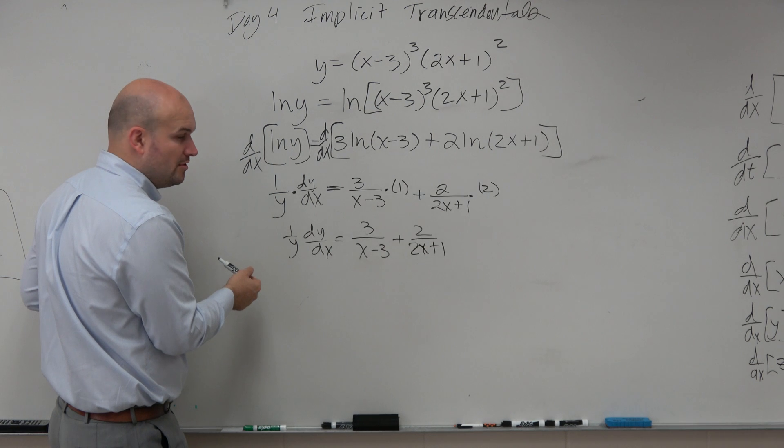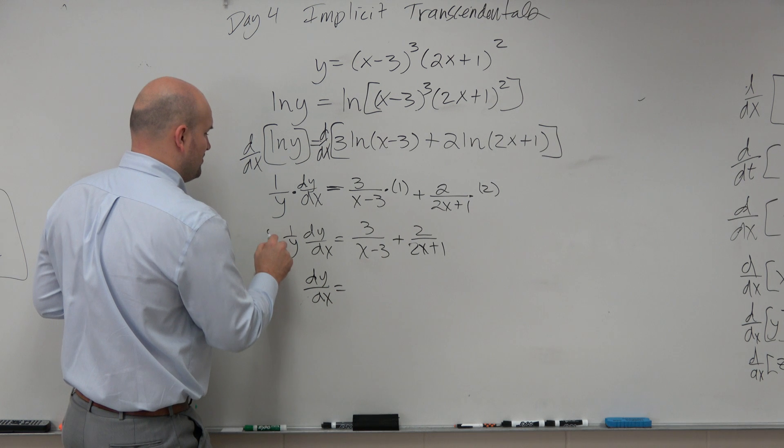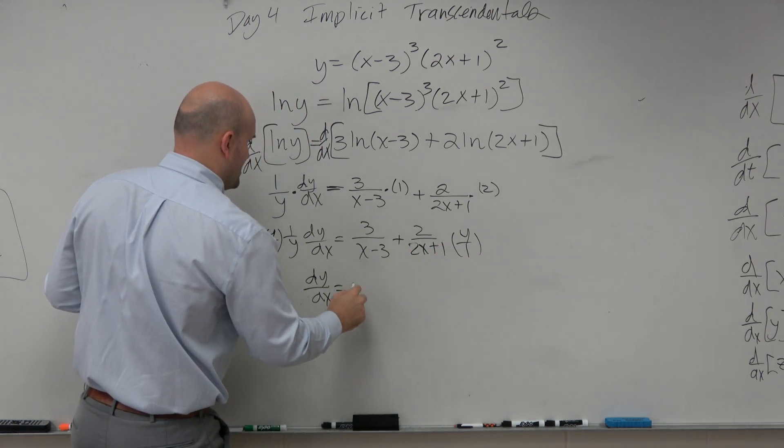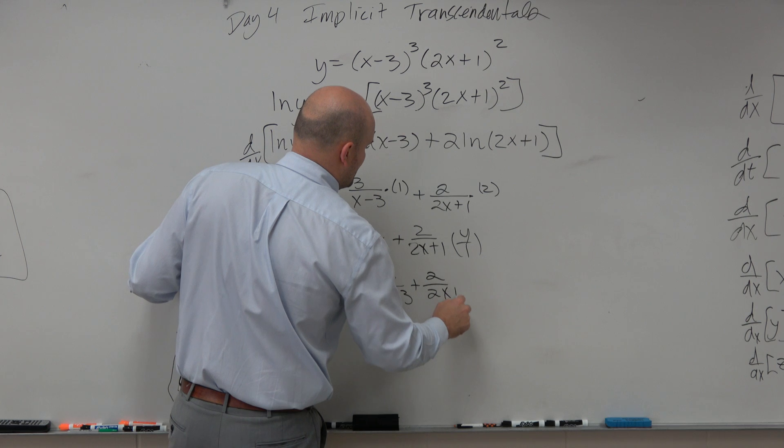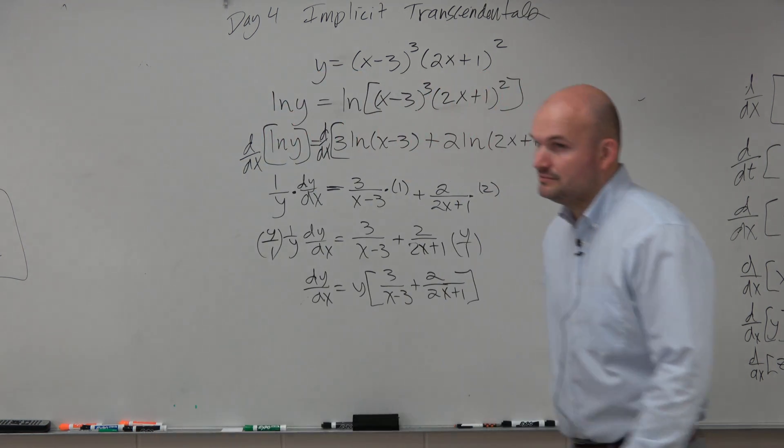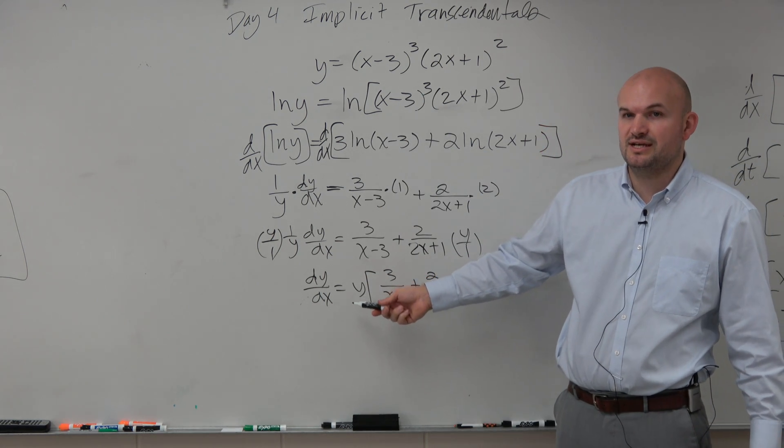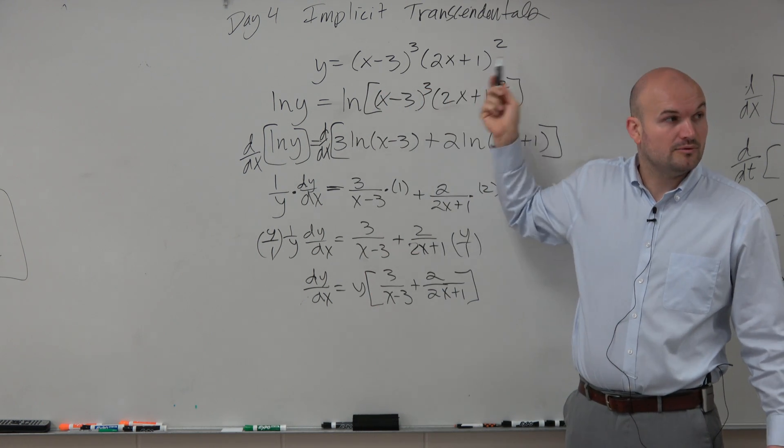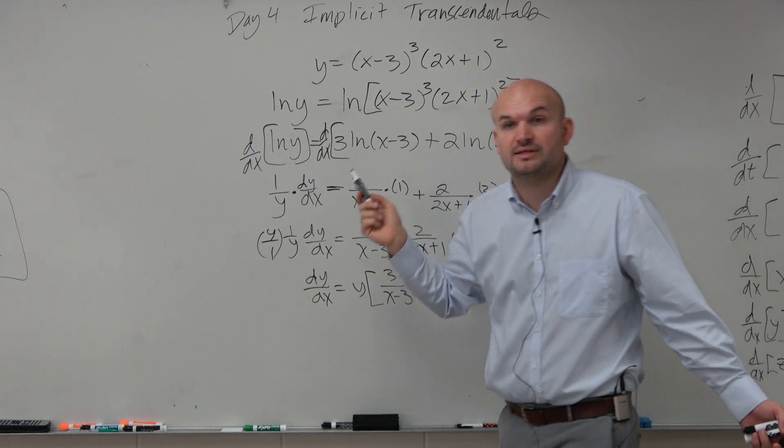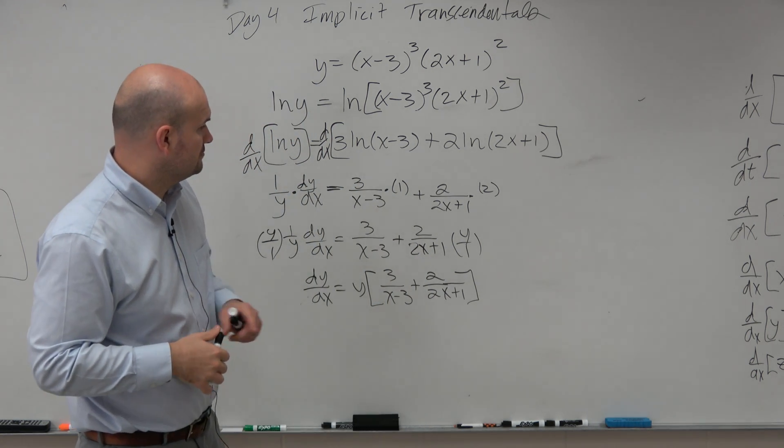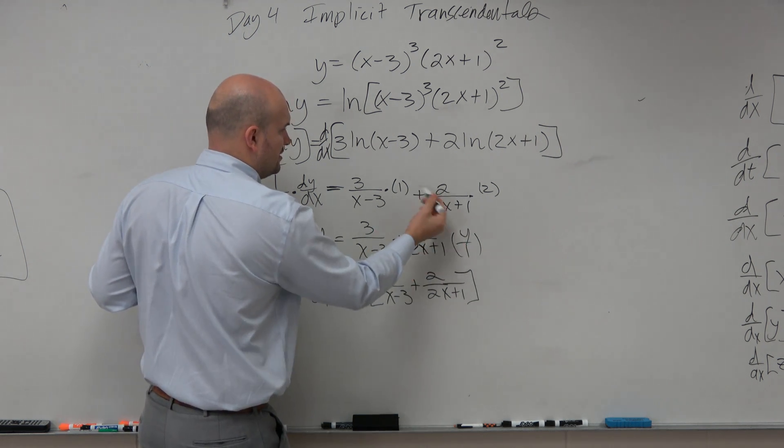But again, what do we want to solve for? We want to solve for y. So I could write dy over dx, multiply by y on both sides. So I'd have y times 3 over x minus 3, plus 2 over 2x plus 1. What did you do with your 2? Oh, I forgot to multiply it. It's 2 times 2. You're right. It's 4.